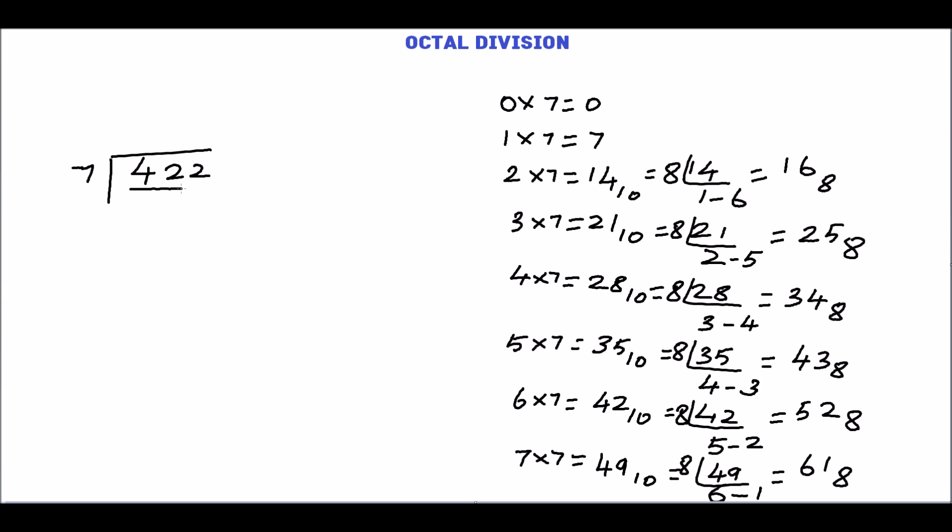How many times 7 goes to 42? Refer multiplication table. Less than 42 we have 34. This is 4 times 7. So the quotient is 4. 4 times 7 is 34. Subtract this.